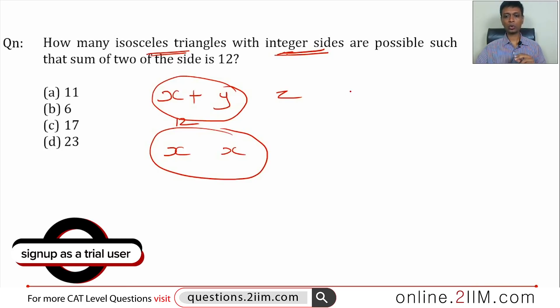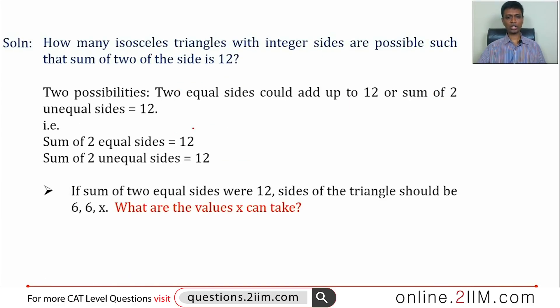So we have two equal sides adding up to 12, so it's 6, 6 and something else, or two unequal sides adding up to 12, let's say 2 and 10. The third side such that this becomes an isosceles triangle, those are the two possibilities. Let's drill down on both.